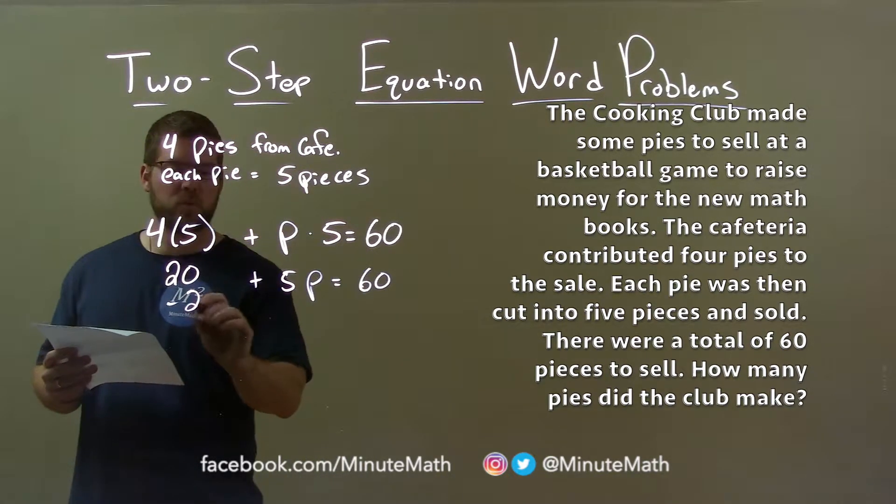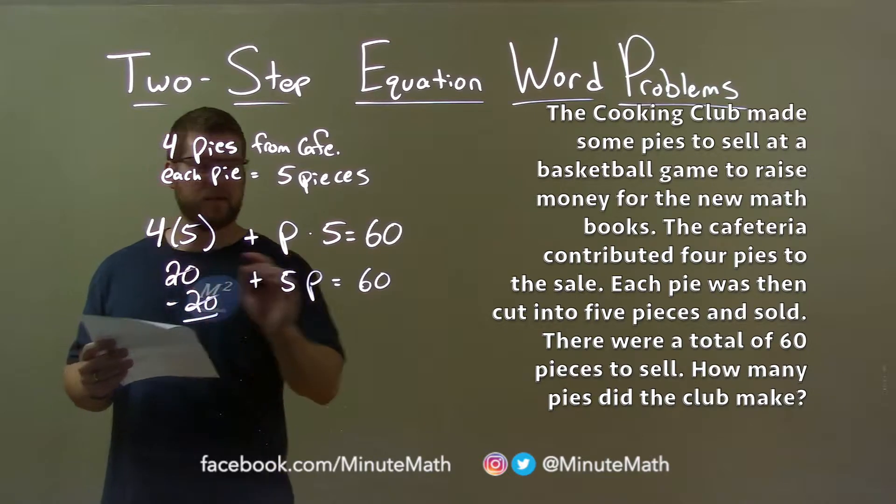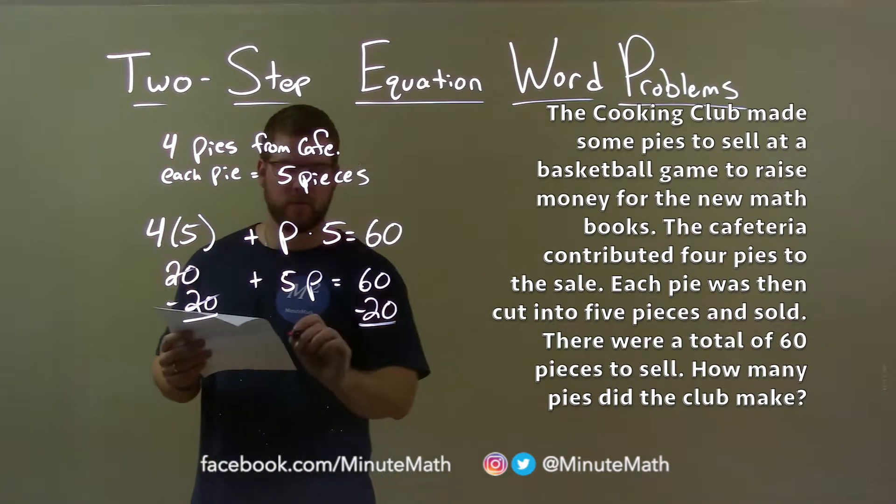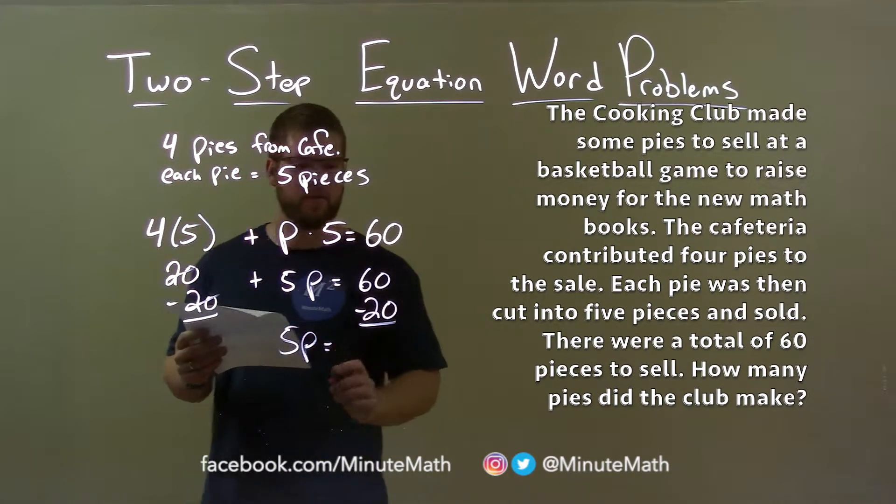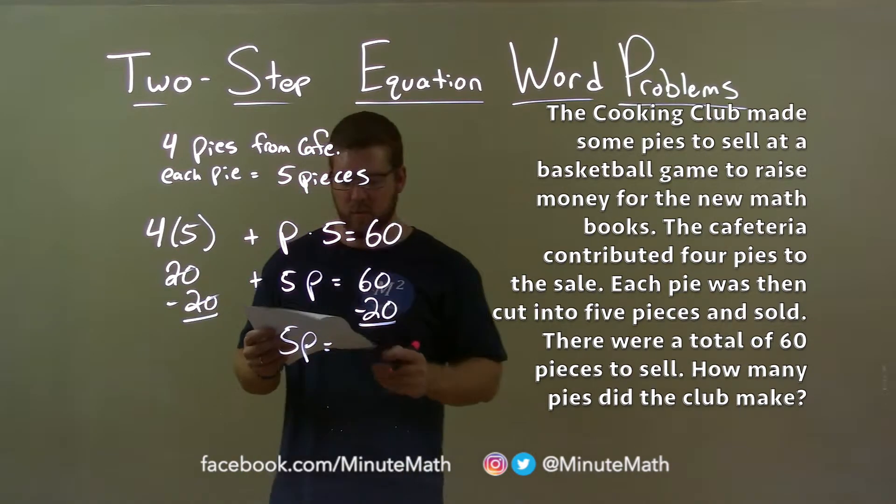Now let's solve for P. Subtract 20 from both sides. The 20s cancel, and we're left with five P on the left, and 60 minus 20 is 40.